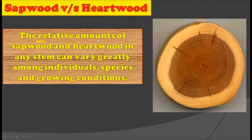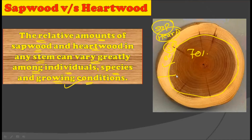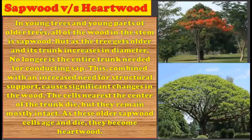The relative amounts of sapwood and hardwood in any stem can vary greatly among individual species and growing conditions. We cannot say a definite proportion — it varies from species to species and individual to individual. In one picture it may appear as approximately 70% hardwood and 30% sapwood, but in other cases sapwood may be higher, or hardwood could be 90% and sapwood only 10%, depending on the species and growing conditions.